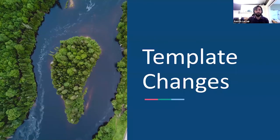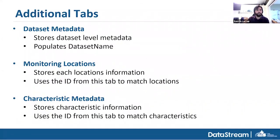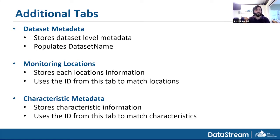Now for template changes — what did we actually change from the first version? We added a bunch of new additional tabs. Counterintuitively, adding more tabs has made it actually easier. The template is a bit bigger, but when you see it you'll see how much more streamlined it is. One of the tabs is the dataset metadata tab. In the old template, all columns existed on one tab — 32 columns on one sheet, which was really overwhelming. We've broken them up into different sections.